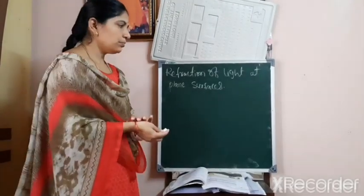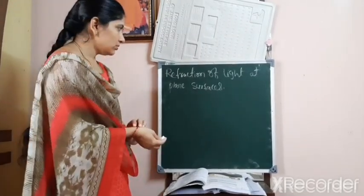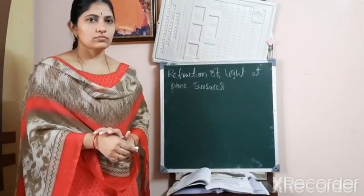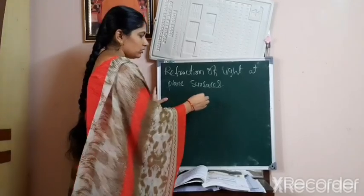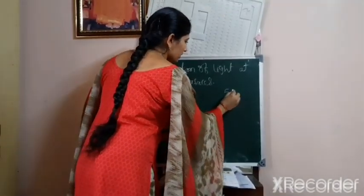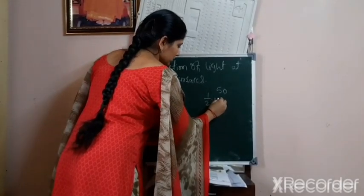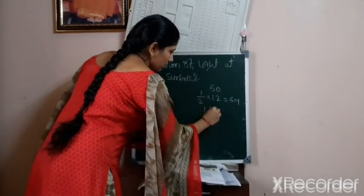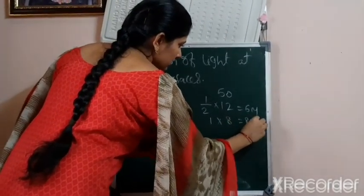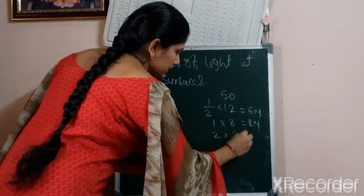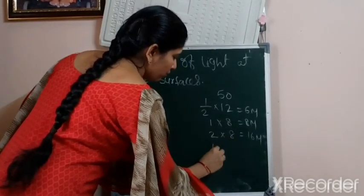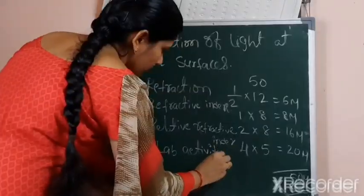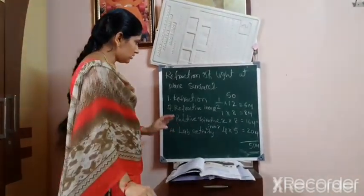Before starting the lesson, let us see what is the pattern of the physics paper and which type of questions may come. Physics paper total marks: half-mark questions — 1, 6 marks; 1-mark questions — 8, 8 marks; 2-mark questions — 8, 16 marks; 4-mark questions — 5, equal to 20. Only these topics are there in our lesson.